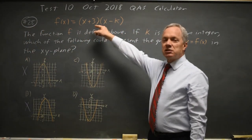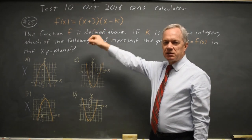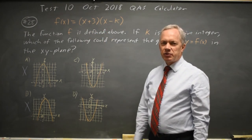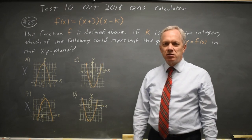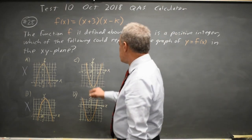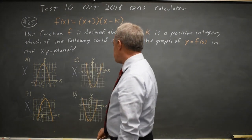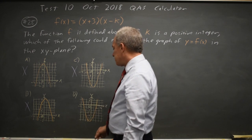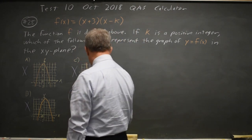Second, since x plus 3 is a factor, x equals negative 3 is a zero, which means x equals negative 3 is an x-intercept. The graph of the quadratic goes through the x-axis at x equals negative 3. Choice C goes through at x equals negative 2, so that is not correct. Choice D goes through at x equals negative 3, so this is the correct answer.